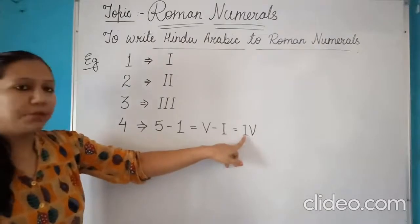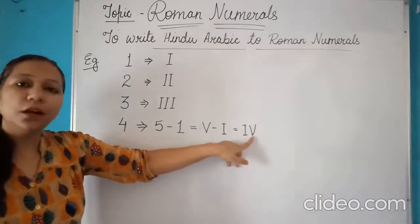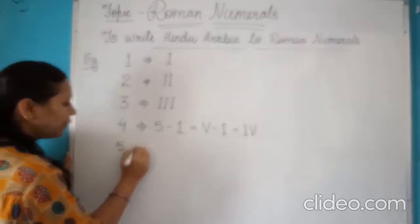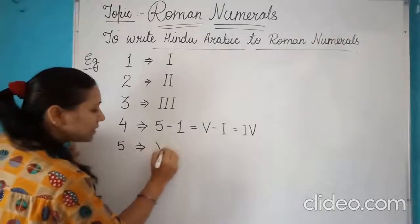Very first 1, the symbol of 1 and then the symbol of 5. Next, the symbol for 5 is simple, it's V.